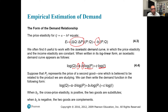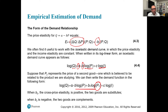Suppose P2 represents the price of a second, related good. We can add further variables to the analysis, including P2 — the price of a related good, which could be a substitute or a complement. If the coefficient on P2 is zero, the goods are independent. When b2, the cross-price elasticity, is positive, the two goods are substitutes; when b2 is negative, they are complements; when b2 is zero, they are independent.